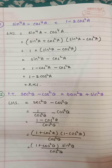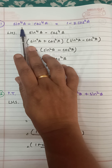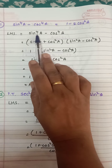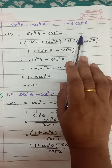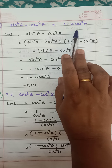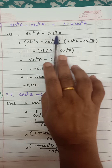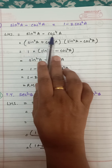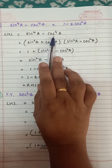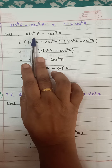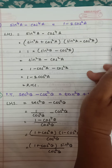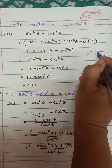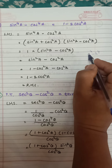Question number 11: sin⁴a minus cos⁴a is equal to 1 minus 2cos²a. Now this is in the form of a⁴ minus b⁴.